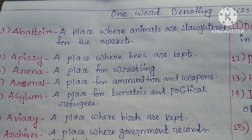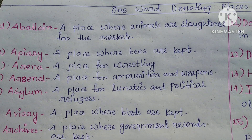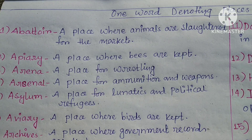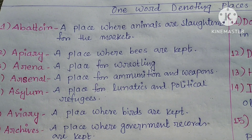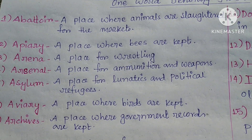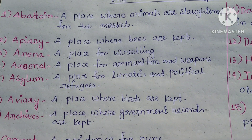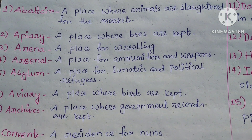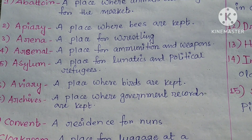Aviary — a place where birds are kept. So bees are kept in an apiary and birds are kept in an aviary. Archive — a place where government records are kept.